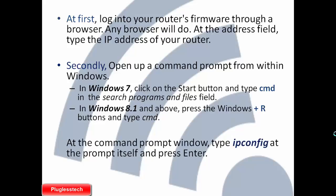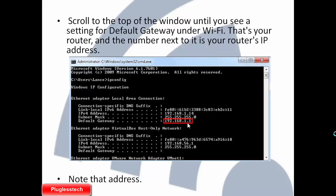At the command prompt window, type ipconfig at the prompt and press Enter. Scroll to the top of the window until you see a setting for default gateway under Wi-Fi — that's your router, and the number next to it is your router's IP address.